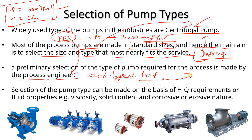There are selection criteria to keep in mind: head versus Q (head versus capacity) requirements, and the fluid properties of the fluid being handled — for example, whether it is water, slurry, or a chemical. What is the viscosity of the fluid? Is there solid content? Is the fluid corrosive? Does the fluid have an erosive nature? These points are very important when selecting a pump.